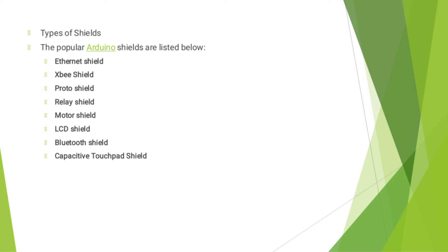The types of shields — the popular Arduino shields are listed below: Ethernet shield, XBee shield, Proto shield, Relay shield, Motor shield, LCD shield, Bluetooth shield, and Capacitive Touchpad shield.